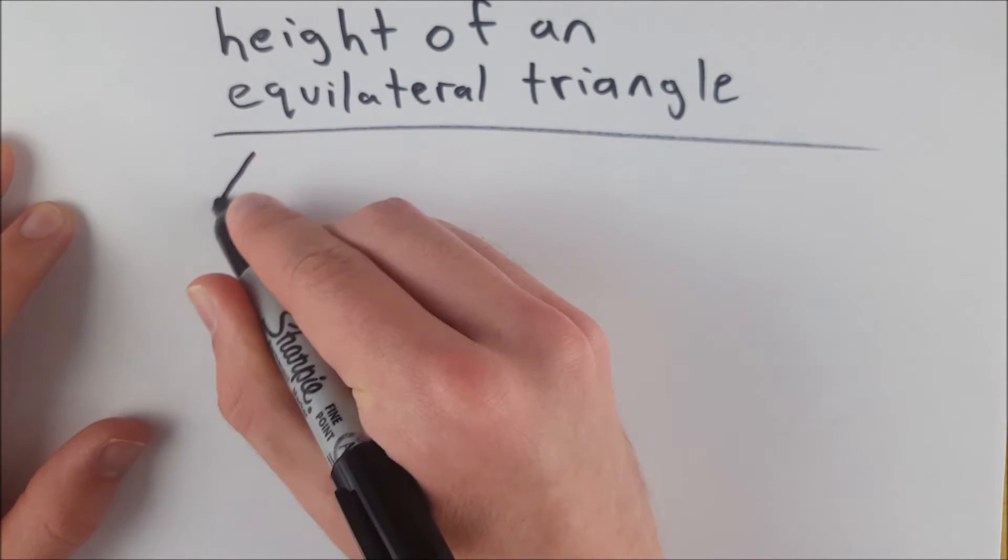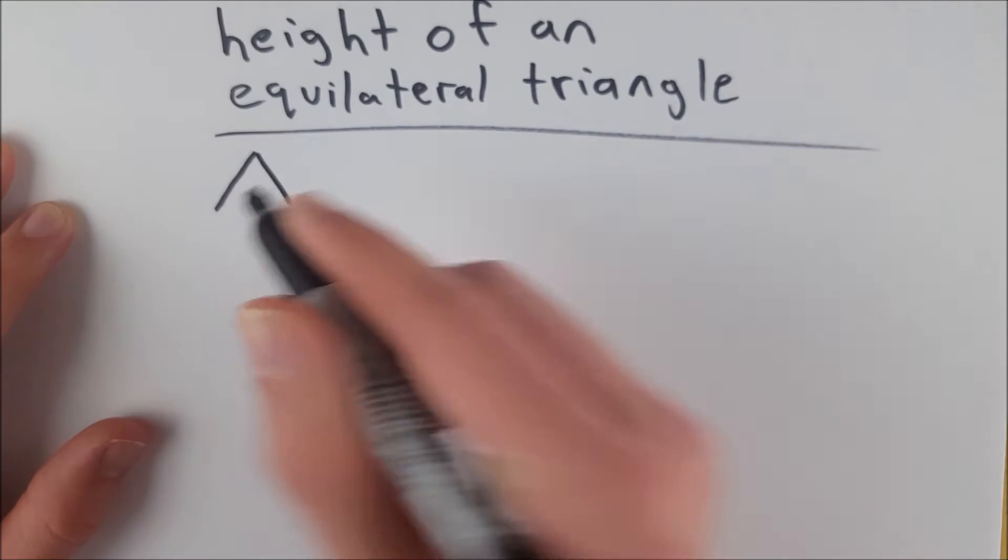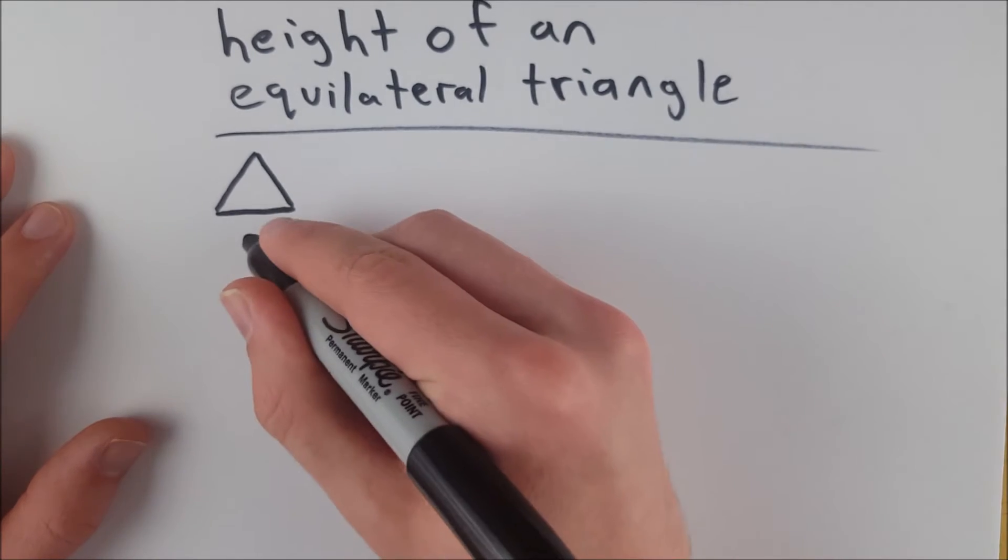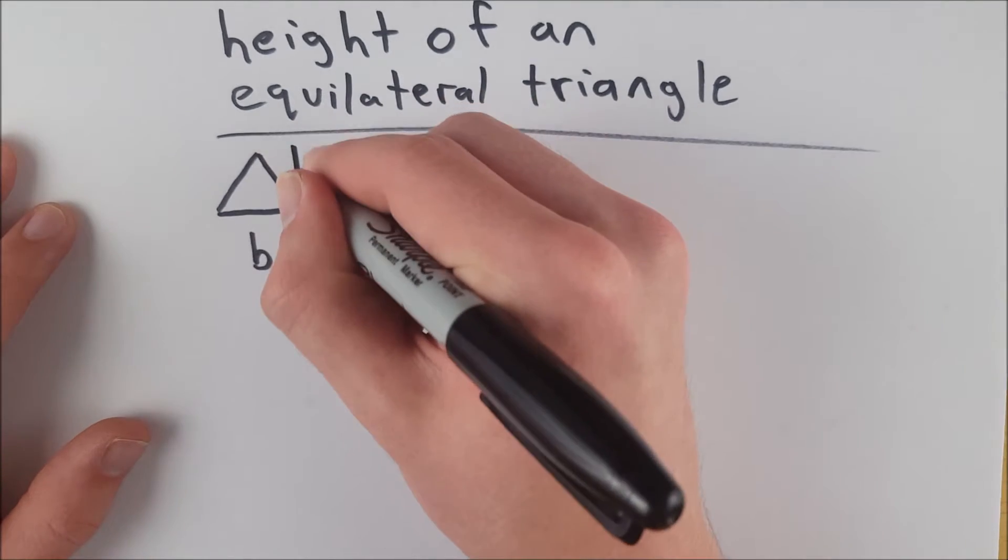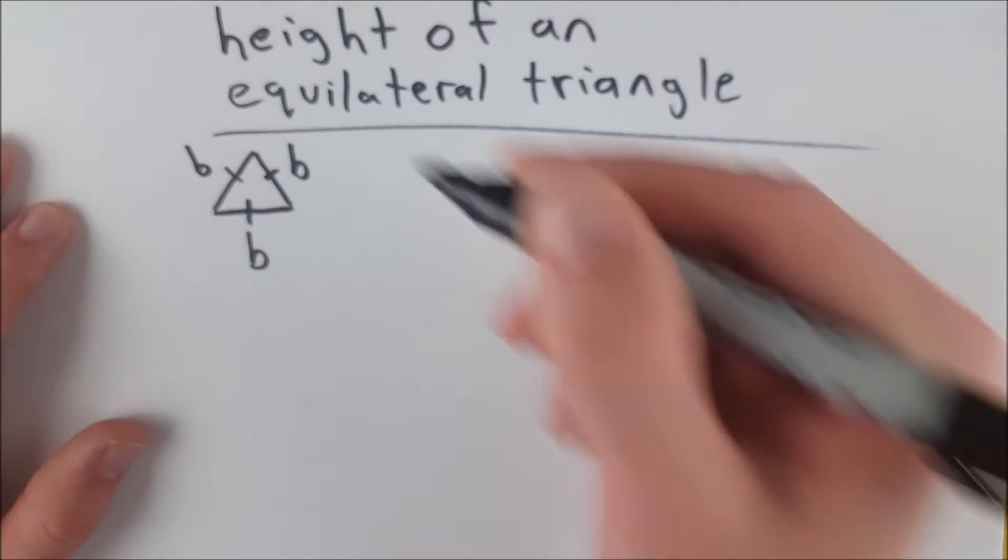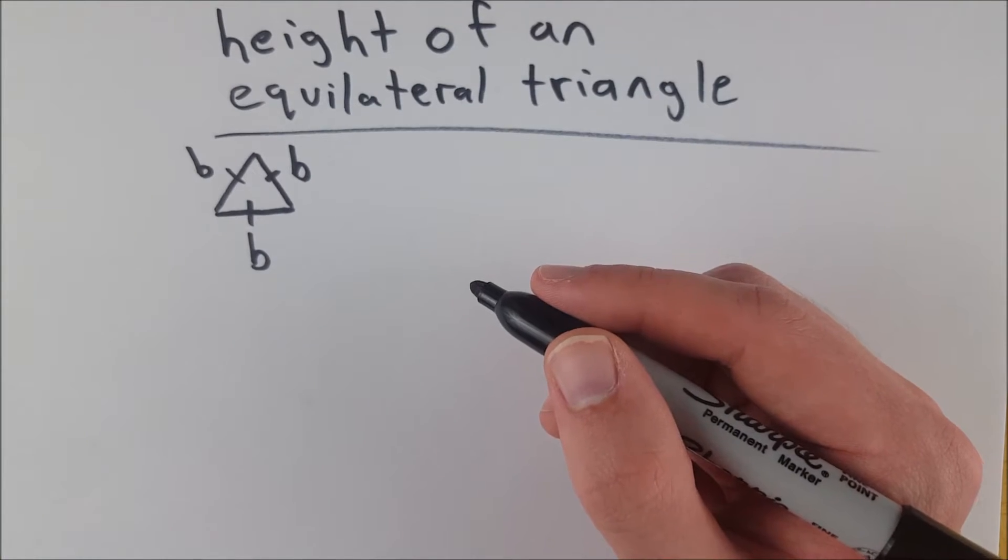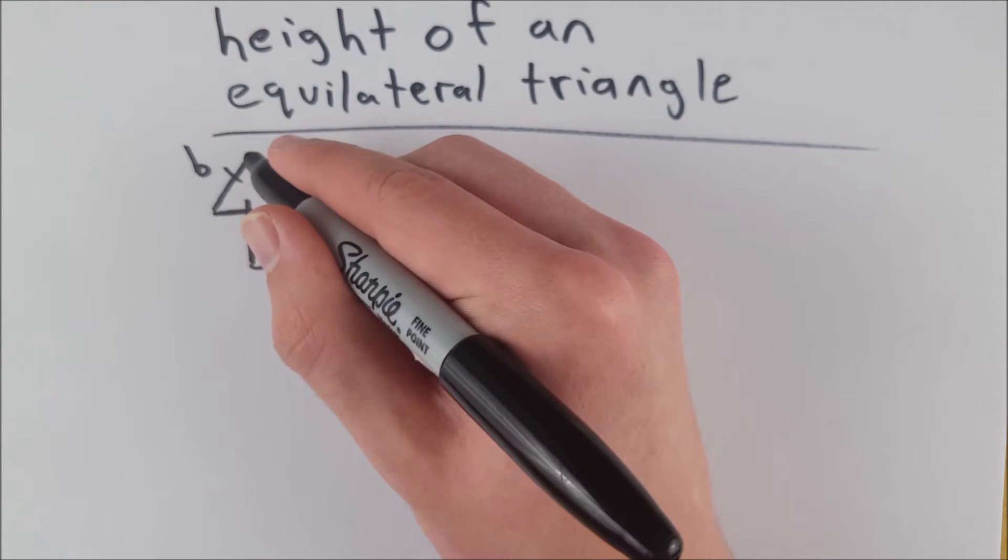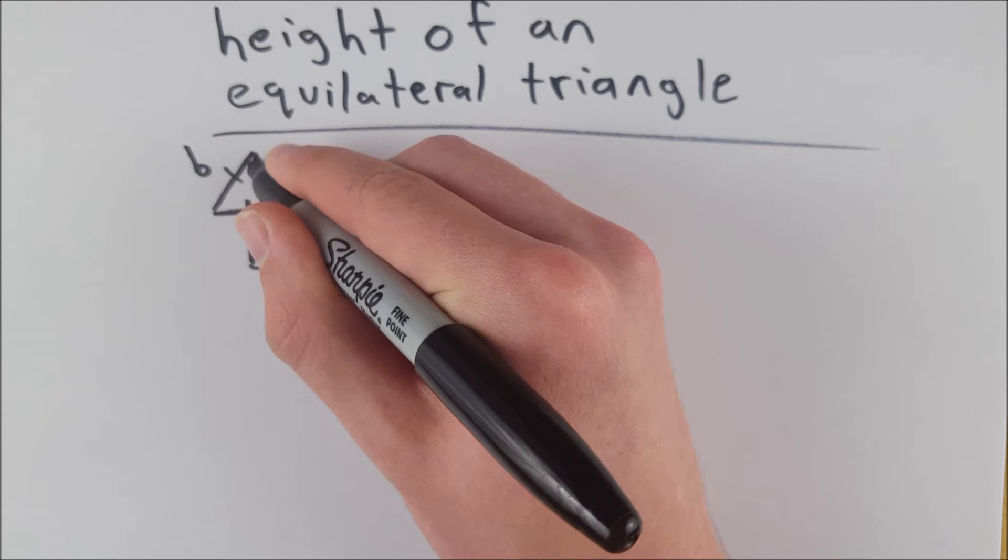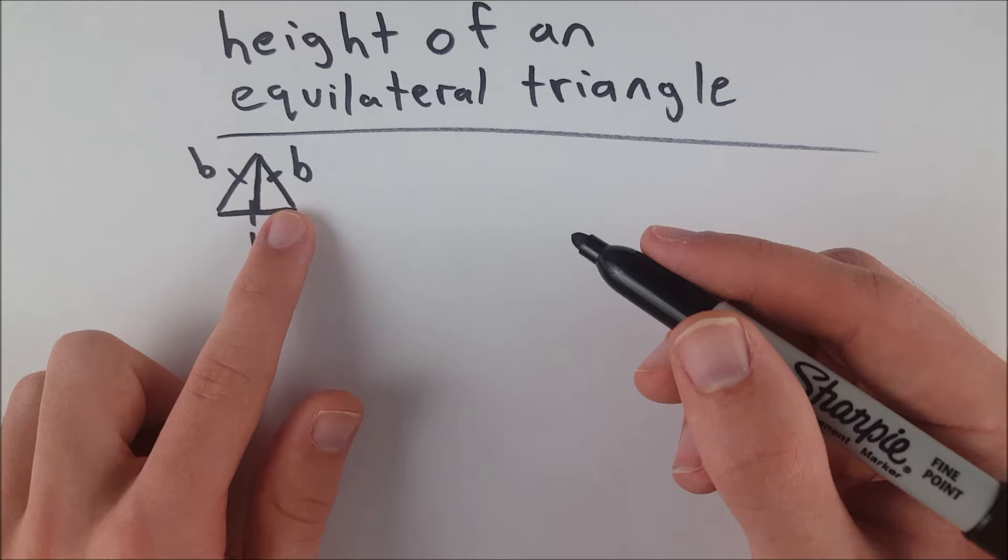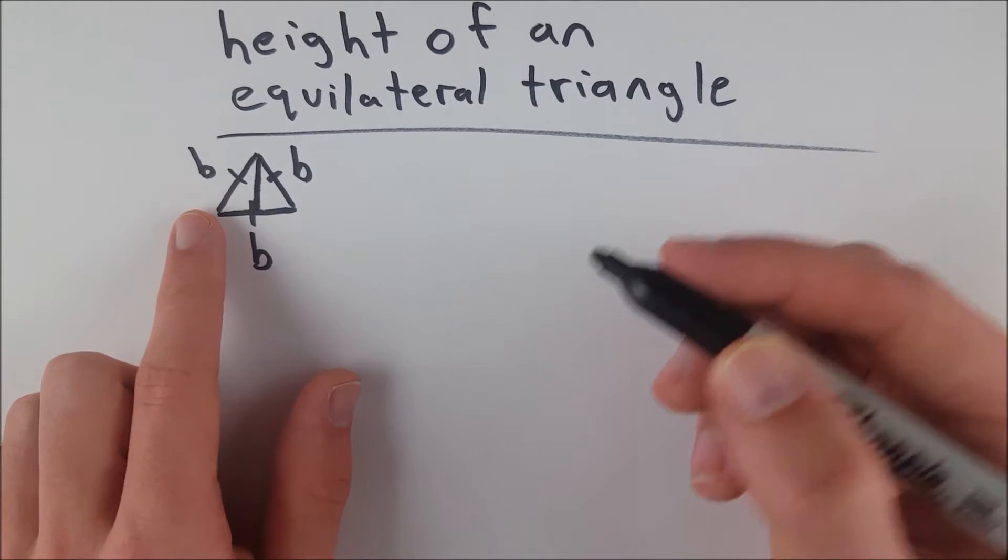So let's say we have an equilateral triangle. Then we know that all of these sides are congruent. Let's suppose that they have length B. Obviously, it doesn't matter what you call them. They're all congruent, and they all have measure B. I probably should have drawn this a little bit bigger, but that's okay. Now we're going to draw an angle bisector through any vertex. Doesn't matter since it's equilateral. But let's say we draw one through here. Now we've cut this triangle into two congruent triangles.